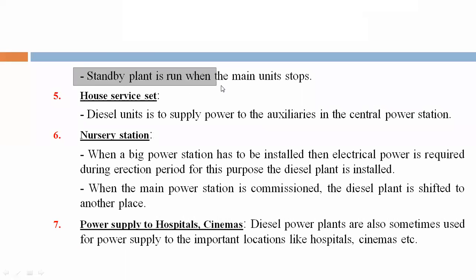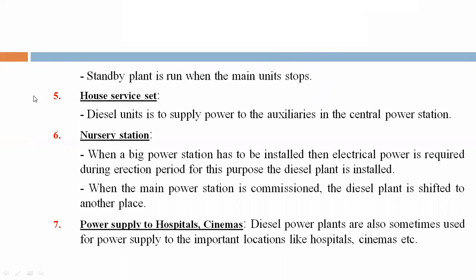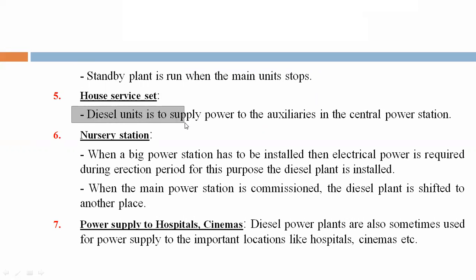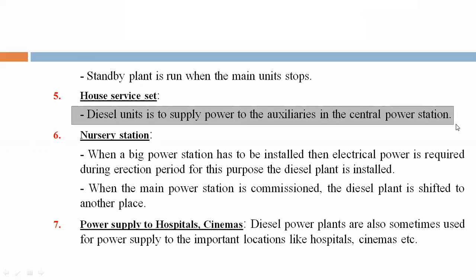Fourth, a standby plant is run when the main unit stops. Fifth, the house service unit is used to supply power to the auxiliary in the central power station.